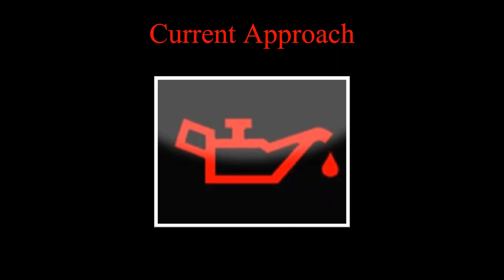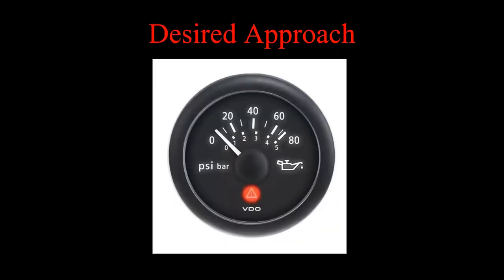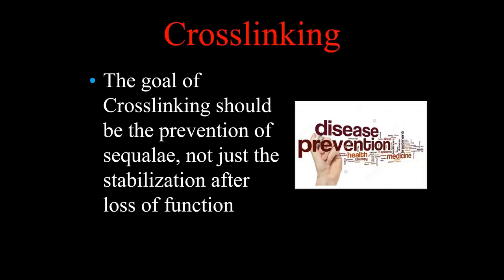Those parameters are like an idiot light — they let you know only when you've already developed a problem. We need a way to monitor changes before actual damage occurs — before vision is lost. The real reason for this is cross-linking. The goal of cross-linking should not be stabilization after vision loss; it should be prevention of vision loss. We need to intervene early enough, but we also need to avoid treating people who don't require treatment.